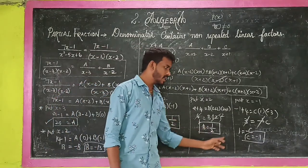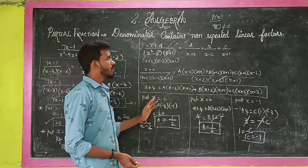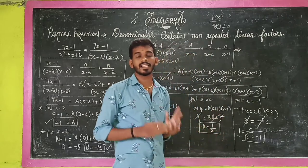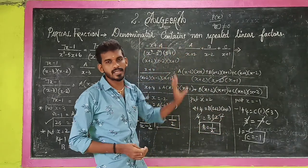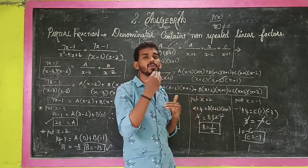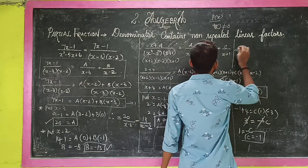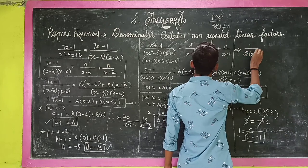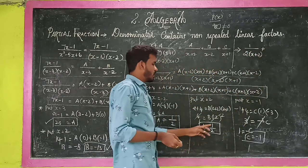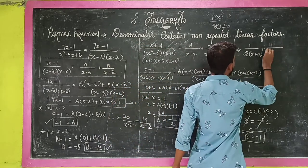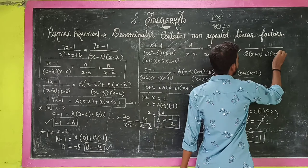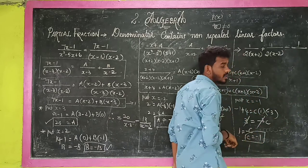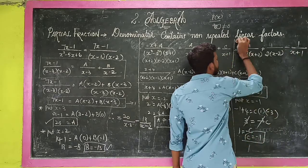Now we have the values of A, B, and C. So the final answer is: (1/2) divided by (x plus 2) plus (1/2) divided by (x minus 2) plus (minus 1) divided by (x plus 1). This is the final answer — this is the partial fraction.